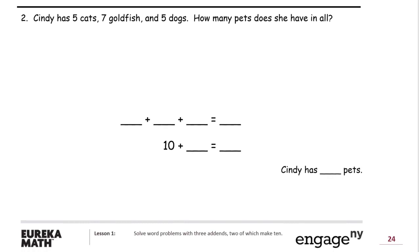Cindy has five cats, seven goldfish, and five dogs. How many pets does she have in all? One, two, three, four, five. These are the cats. C for cats. There's five of them.